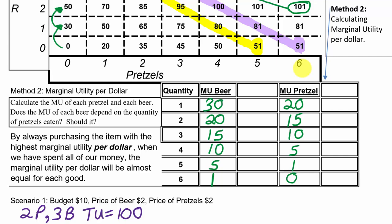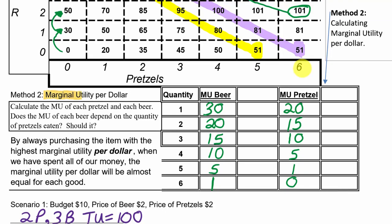Now we need to take into account how expensive each of these things are. It's not just how happy something makes you that's important - it's how expensive it is. A brand new car might give me 10,000 additional happiness, but the price is very expensive. Whereas a bottle of water might only give me 20 in additional happiness, but it's very cheap. We have to take into account how much additional happiness you get per dollar you have to spend.